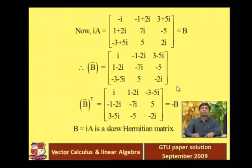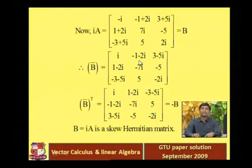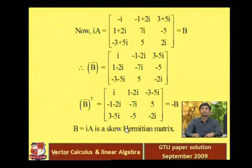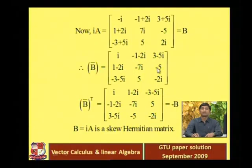Now transpose B-bar. The first row [i, minus 1 minus 2i, 3 minus 5i] becomes the first column, and so on for the second and third rows becoming columns.